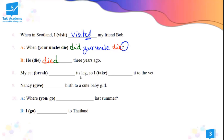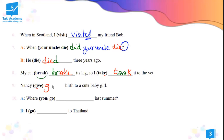My cat break its leg. Break is irregular and it becomes 'broke'. My cat broke its leg. So I take it to the vet — I took. Make sure to spell 'took' with double O. I took it to the vet — there is no E at the end. Nancy gave birth to a cute baby girl. 'Give' is irregular and it becomes 'gave', with an A.